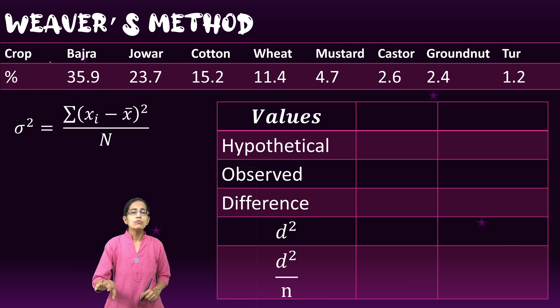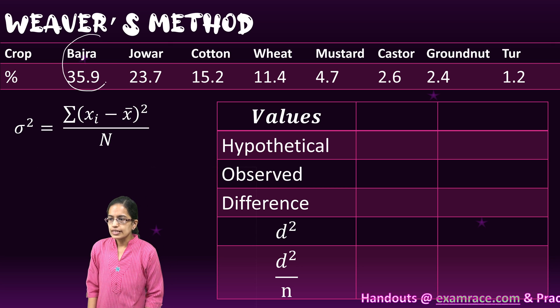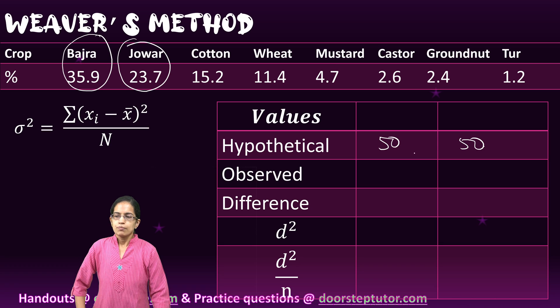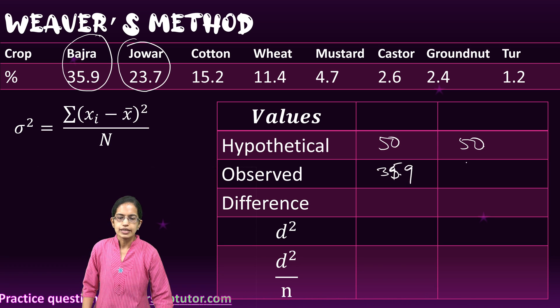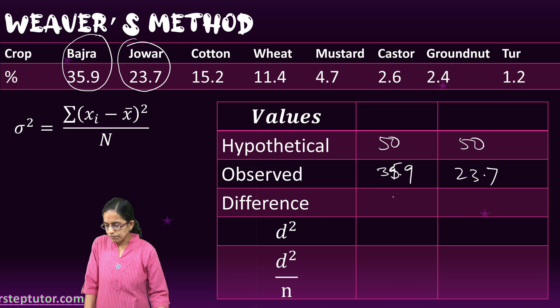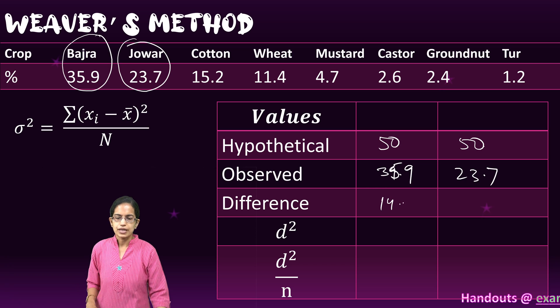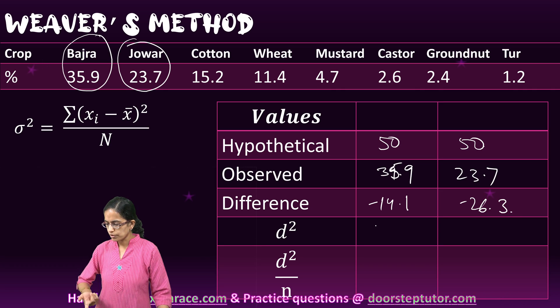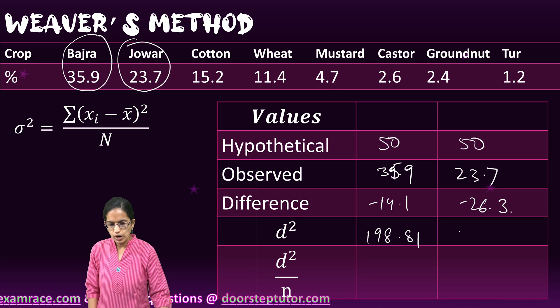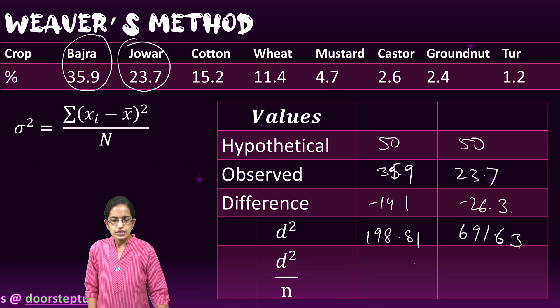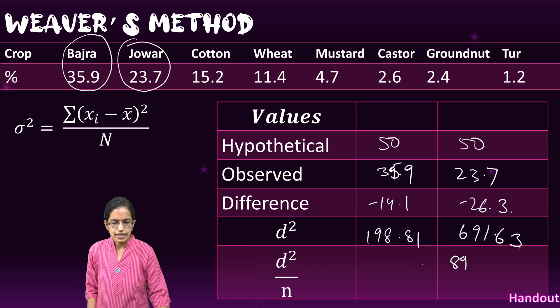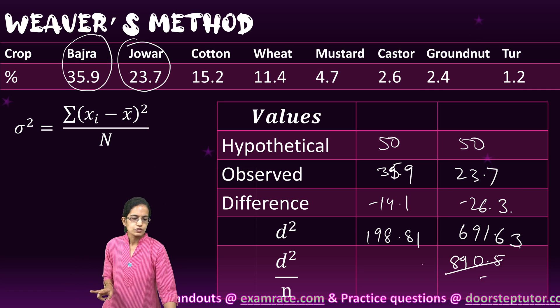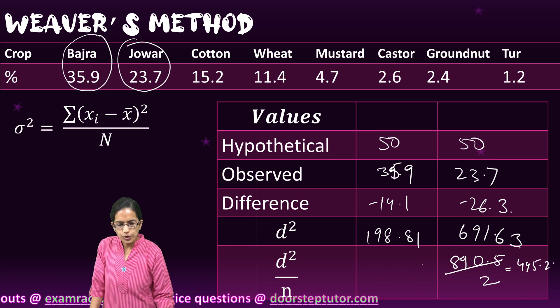In the same example, I move with a twin culture or die culture approach where I take two crops, which is Bajra and Jowar. My hypothetical values are 50 and 50. My observed values are 35.9 and 23.7. I take the difference, which is minus 14.1 and minus 26.3. I square these values. The values come as 198.81 and 691.63. I sum up these values, so the sum comes up as 890.5. Since I have taken two crops into account, I would divide this value by 2. My value here would be 445.25.